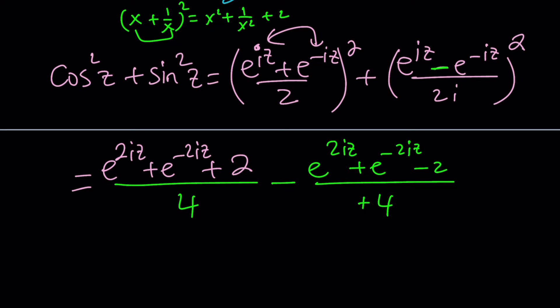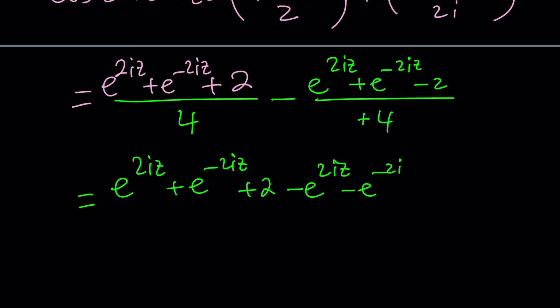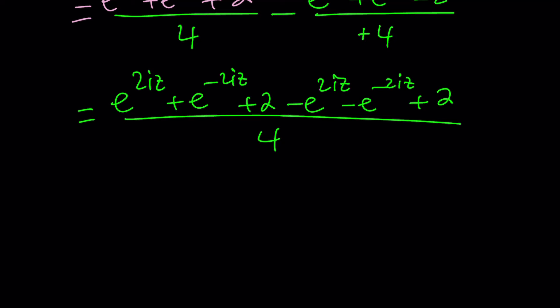We can subtract the numerators because we have a common denominator. So we get: (e^(2iz) + e^(−2iz) + 2) minus (e^(2iz) + e^(−2iz) − 2), all divided by 4. Notice the e^(2iz) terms cancel, the e^(−2iz) terms cancel, and you end up with 2 + 2, which is 4.